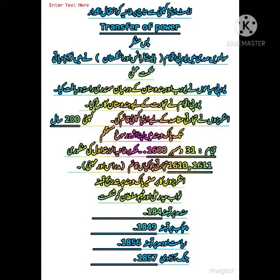اس طرح انہوں نے پورے ہندوستان پر قبضہ کر لیا۔ East India Company کے ذریعے سے ہندوستان پر قبضہ کیا گیا اور پھر باقاعدہ طور پر حکومت برطانیہ کی حکومت شروع ہو گئی۔